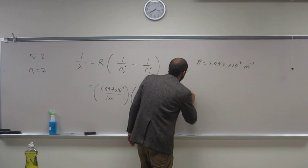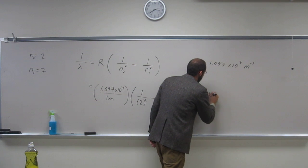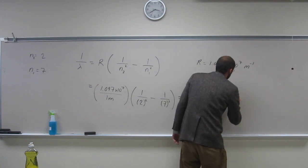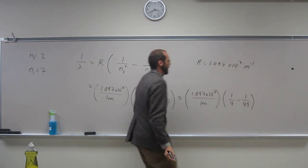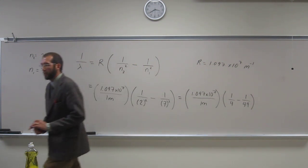And then, let's just continue along, because I think people had a hard time here. So solve this portion first, and then multiply it by this portion. Let's do that together. So, 0.25 minus 1 divided by 49, and then multiply that by 1.097.